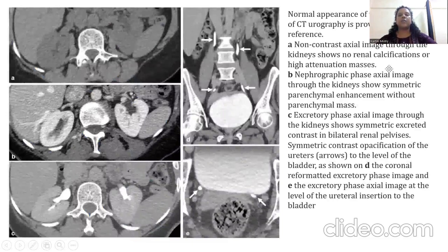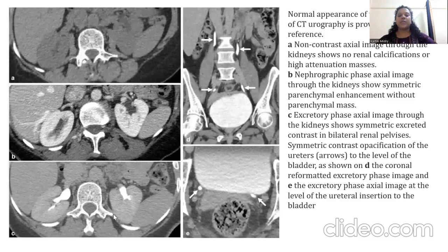Here we can see the normal appearance of the three phases of CT urography. Image A is a non-contrast axial image through the kidneys where no renal calcification or high-attenuation masses are noted. Image B is the nephrogenic phase showing symmetrical parenchymal enhancement without any parenchymal mass lesion. Image C is the excretory phase through the kidneys showing symmetrical excreted contrast in bilateral renal pelvises and symmetrical contrast opacification of the ureters at the level of the bladder. Image D is the coronally reformatted excretory phase image, and Image E is the excretory phase axial image at the level of the ureteral insertion at the bladder.